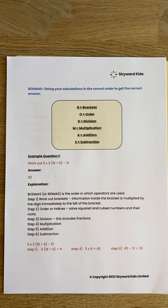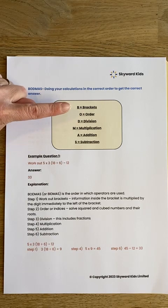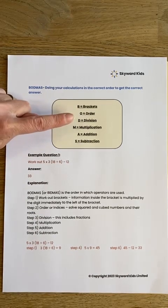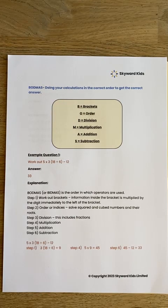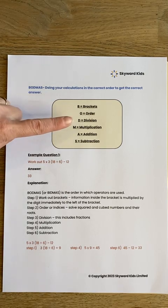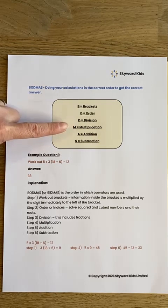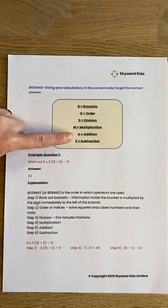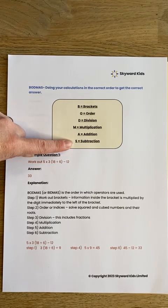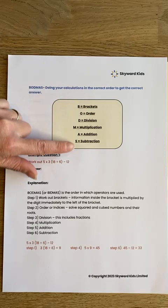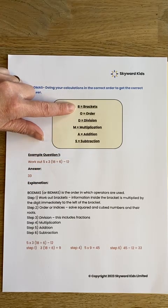The word BODMAS stands for: B for brackets, O for order of indices. Indices are those powers — we might recognise those from our squared numbers, our cubed numbers, where we have the small 2 or the small 3. The D is for division, the M is for multiplication, A is for addition and S is for subtraction. And that's the order we carry out the calculation.